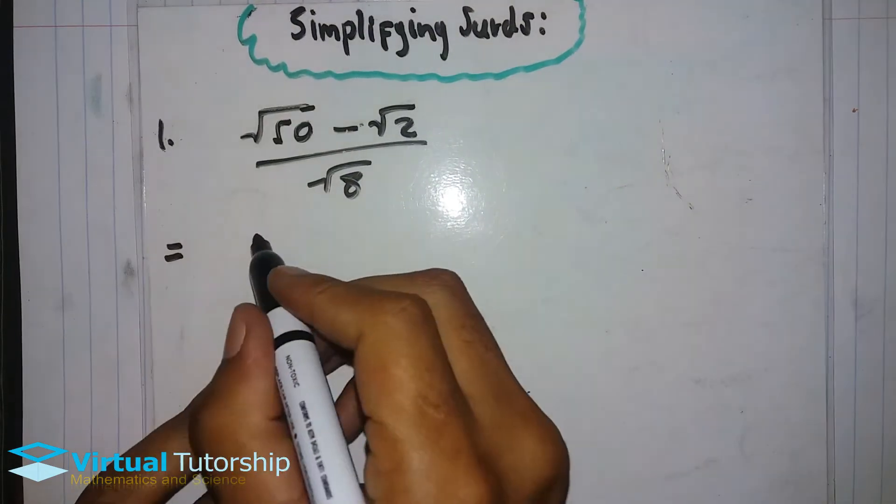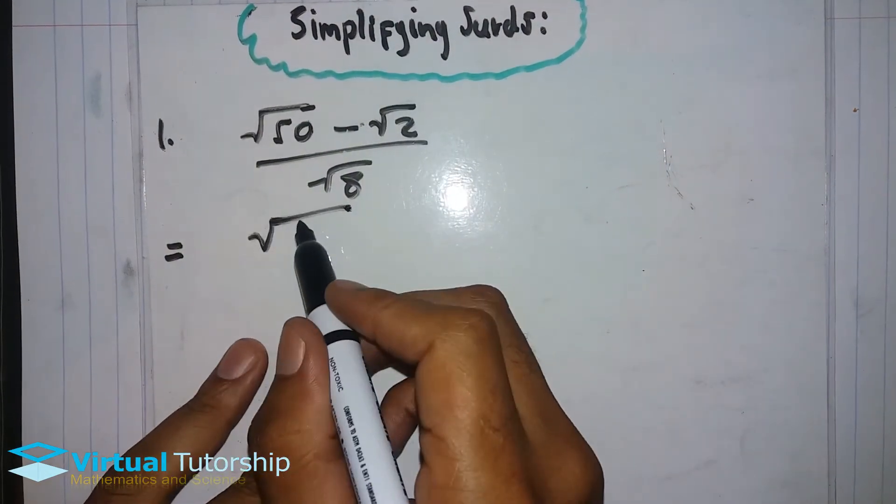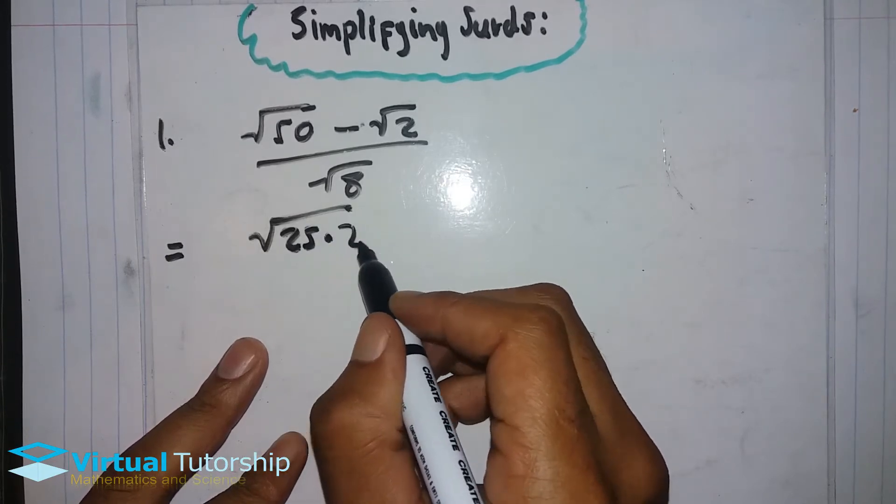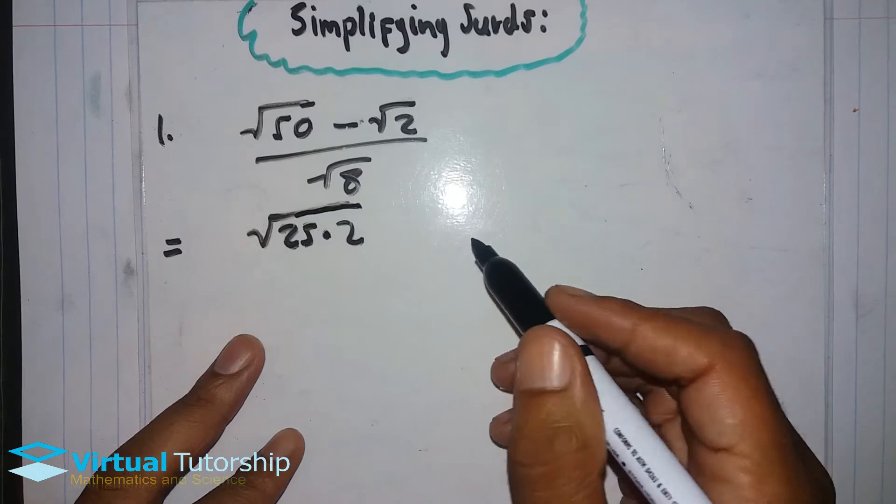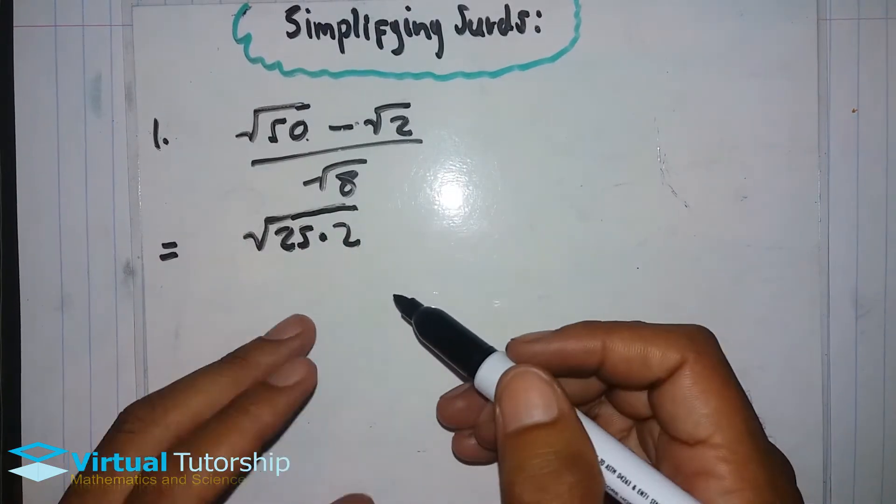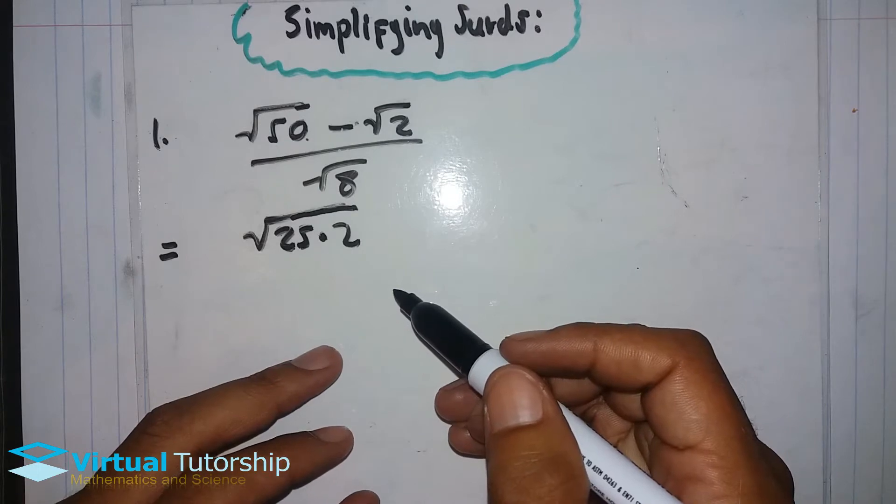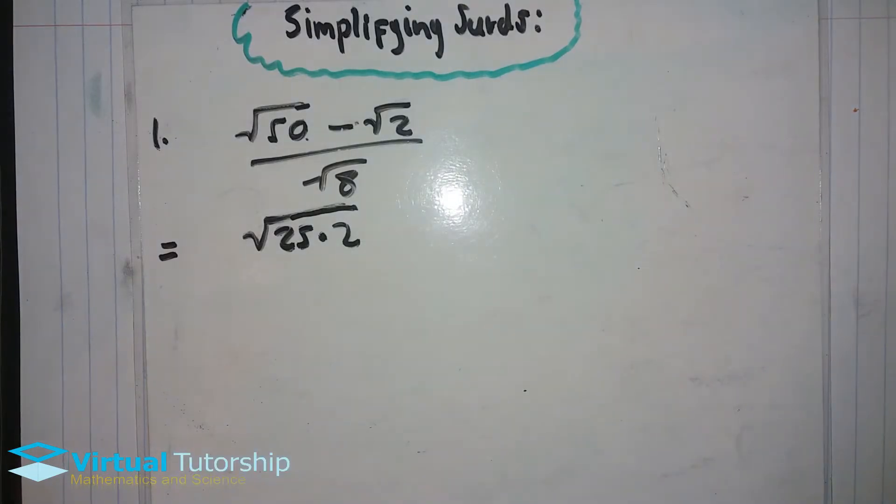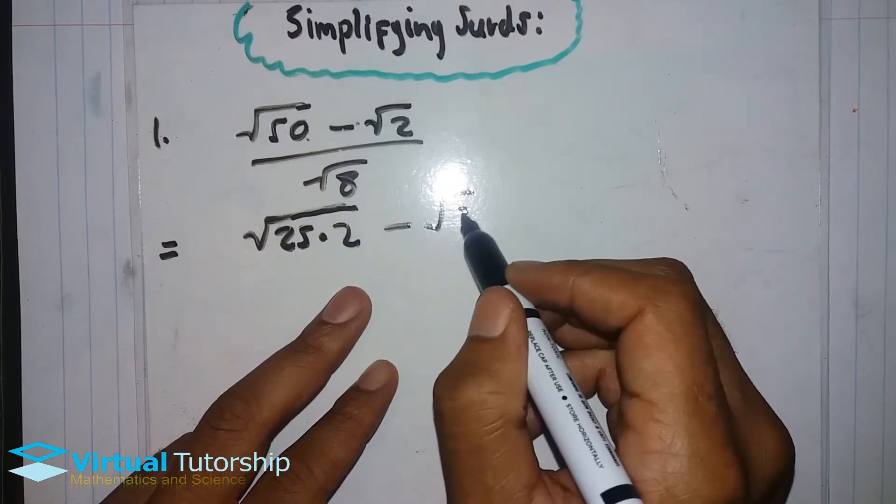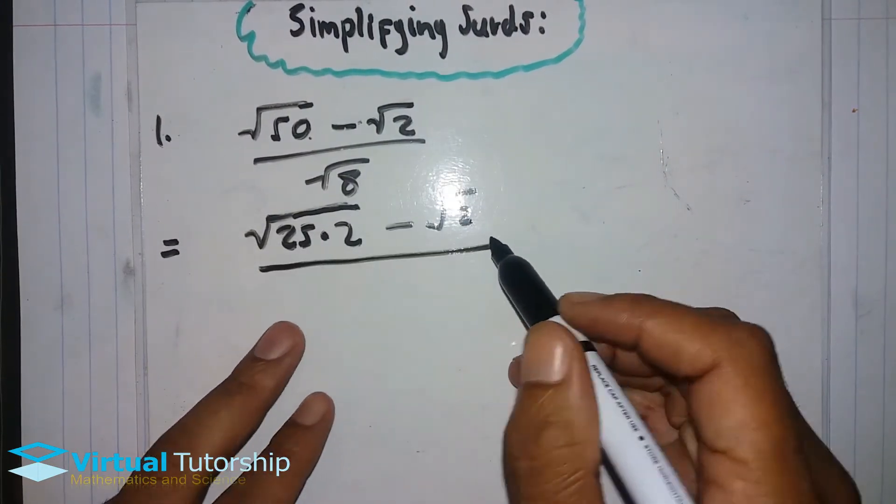So in this example, for 50, you rewrite it as 25 times 2. If your base is not a prime number, rewrite it as a prime times a perfect square. Minus 2, 2 is a prime.